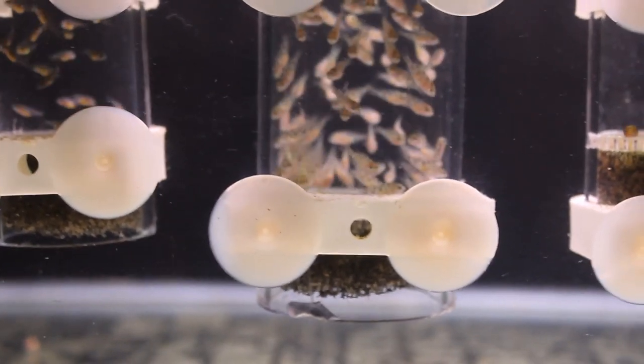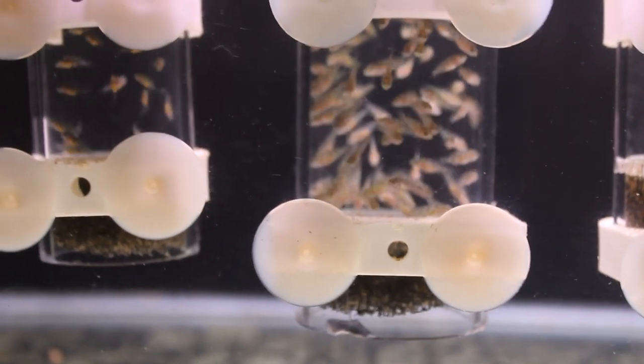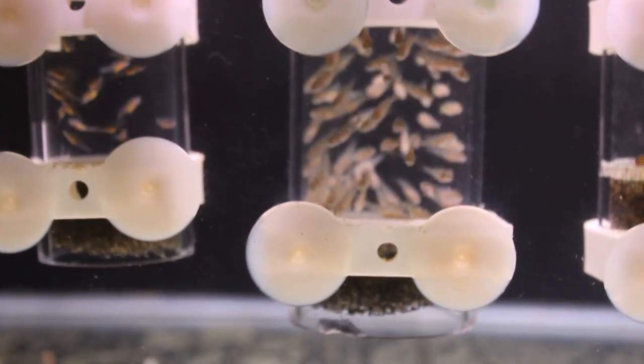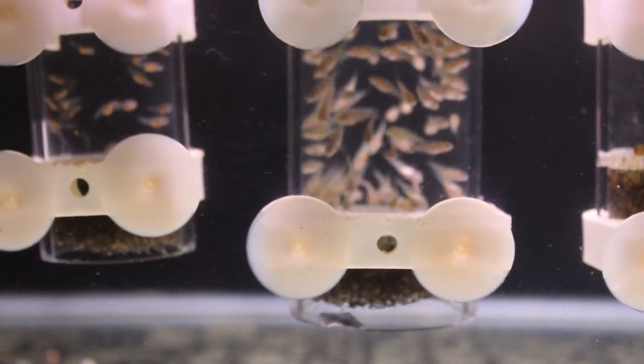So you can start these out in a 20 liter tank. The smaller the tank the better. You want to be, you want the fry to be able to find the food. If they've got to spend too much time hunting for food, they can die of starvation.